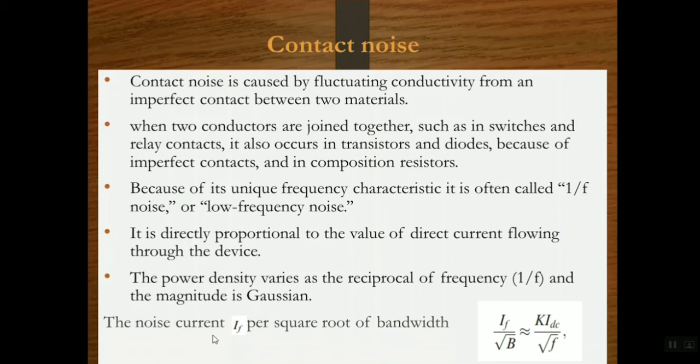The noise current If per square root of bandwidth 1/f per root B equals K times IDC divided by root of f, where IDC is the average value of DC current in amperes, f is the frequency in hertz.